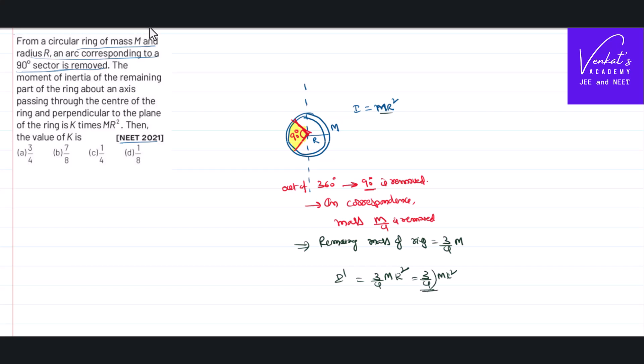He called this 3 by 4 as K. How much is that K, is asking. K times of MR square, MR square into, how much is the product that I have? 3 by 4. So value of K is simply 3 by 4.